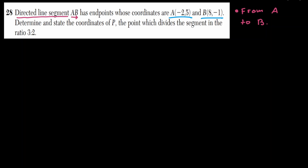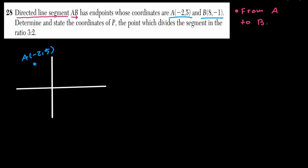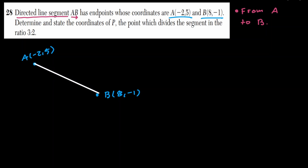Negative 2 comma 5 should be somewhere around here, and 8 comma negative 1 should be somewhere around here. We would like to know the location of point P that divides the line segment into a ratio of 3 to 2.